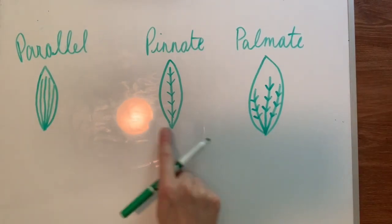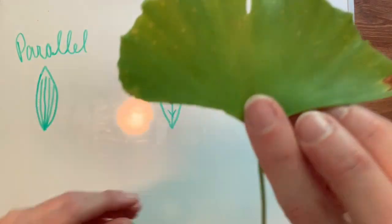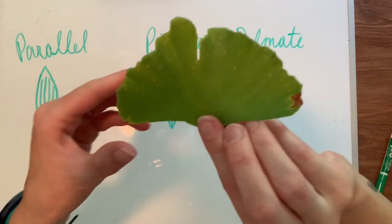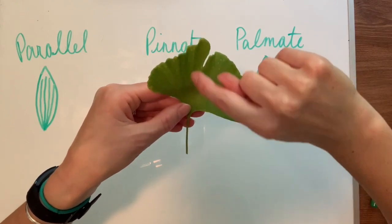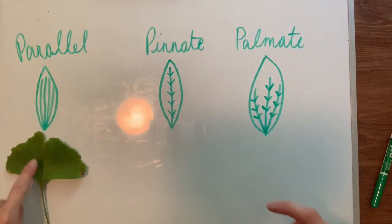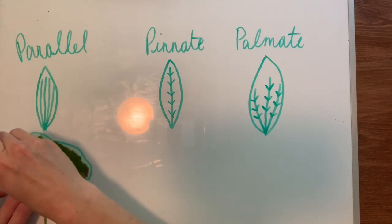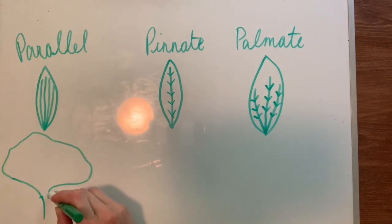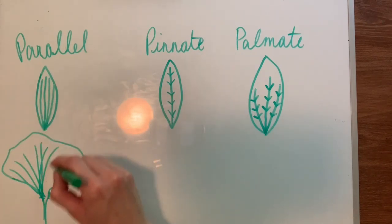They don't all need to be shaped the same way — they could be shaped differently, so let's look at some examples. Here we have parallel veins. This is a ginkgo leaf and all of those veins start at the base and then they all run alongside each other. It's not shaped like an almond at all — it's shaped more like a fan. So don't always just be looking for an almond shape.